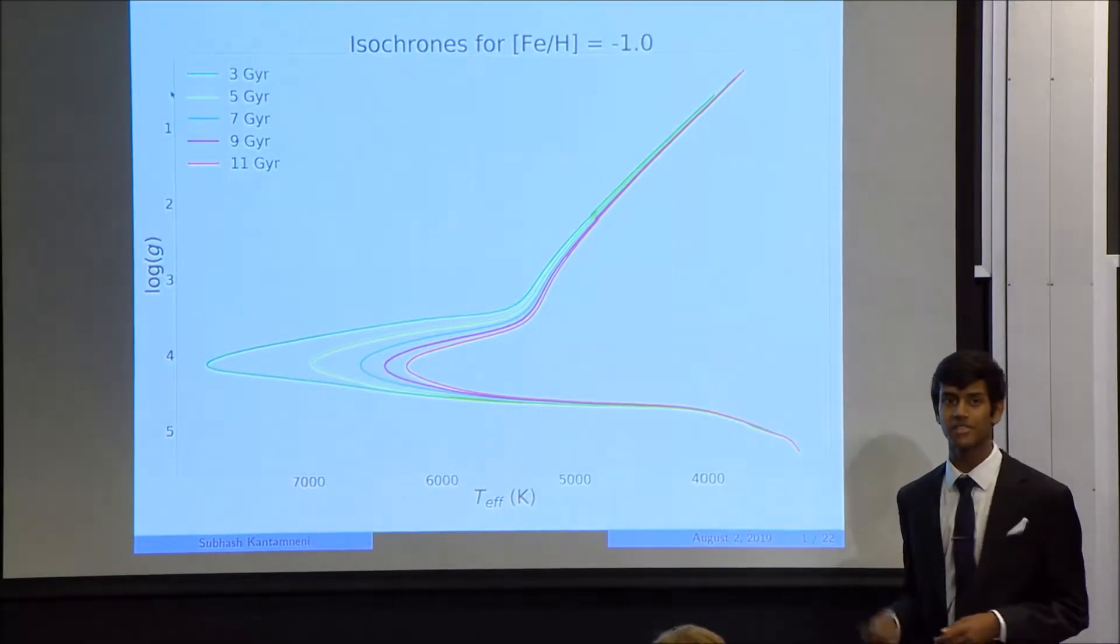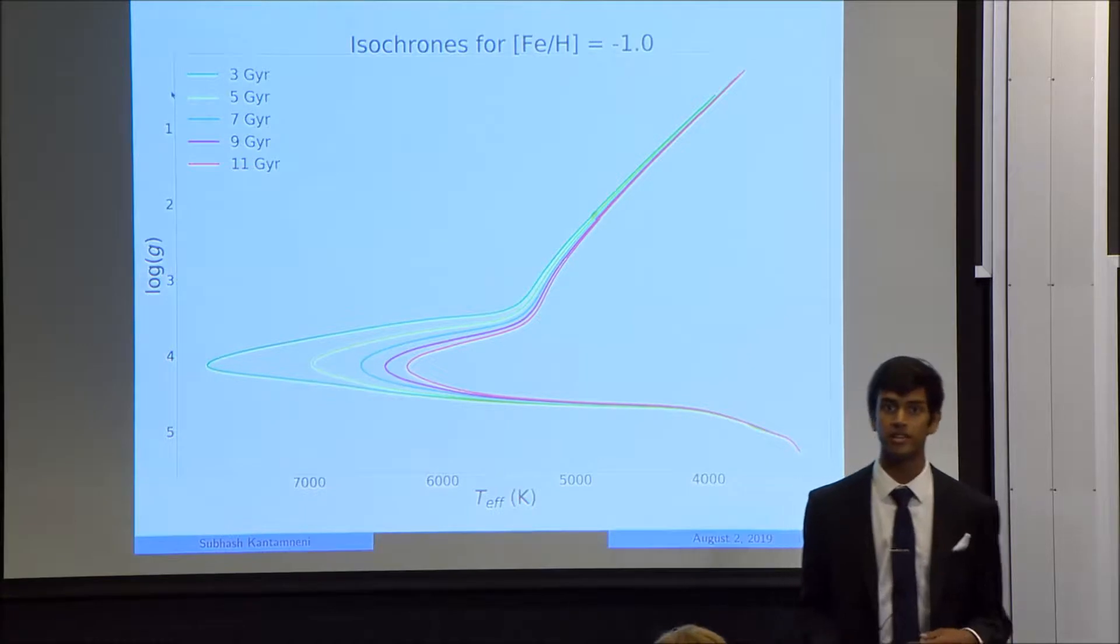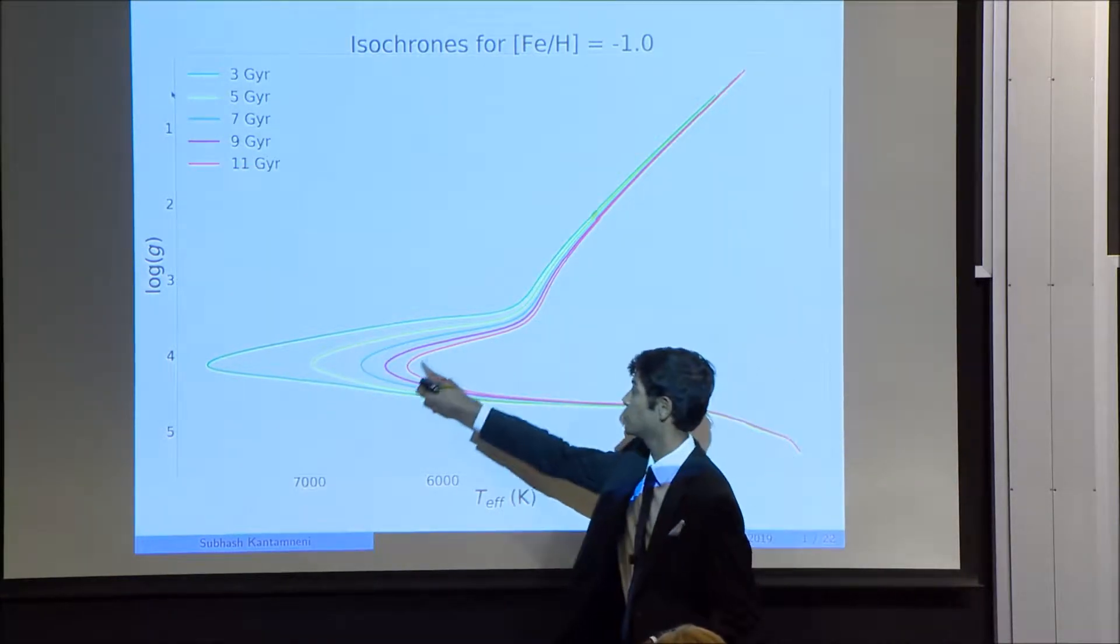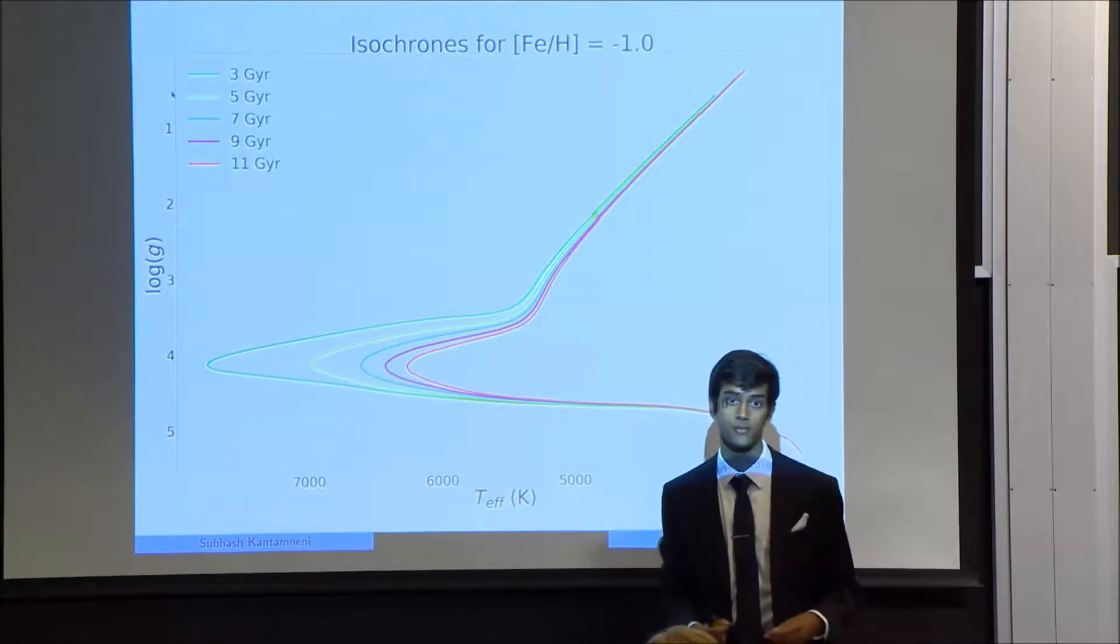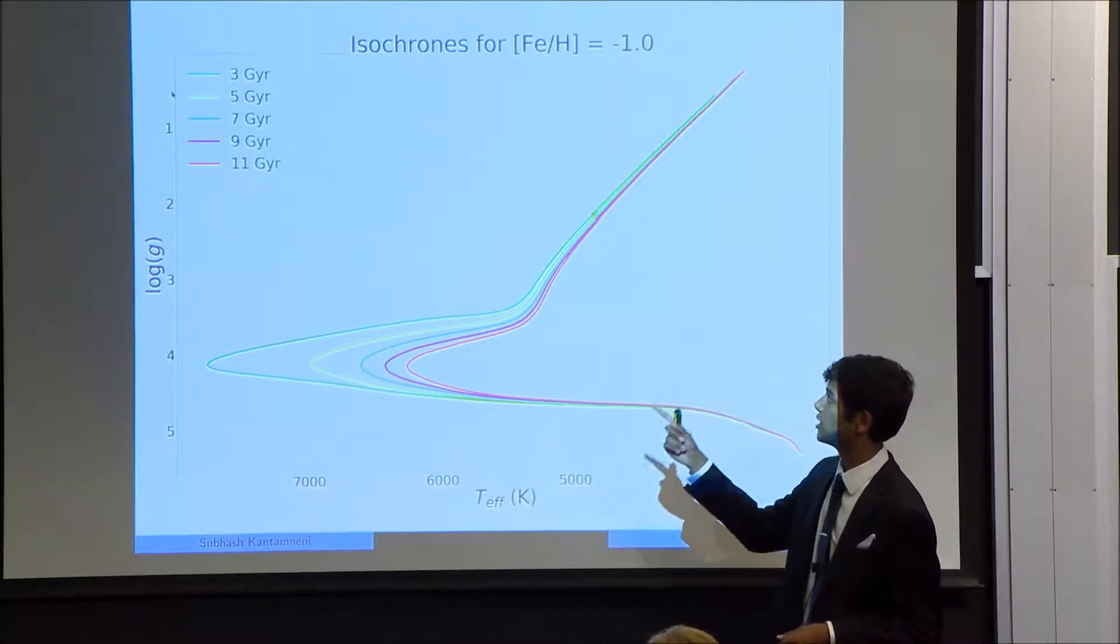Isochrones are graphs that plot stars based on their temperature and gravity. If enough stars of a common age and metallicity are plotted on a graph with these axes, we get a very distinct curve that corresponds only to stars of that age and metallicity. And you see here isochrones plotted for various stellar ages, where one giga year or GYR is one billion years.